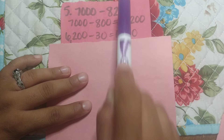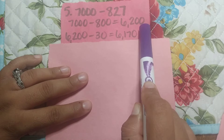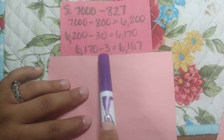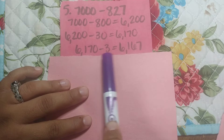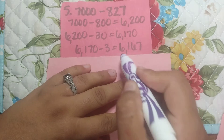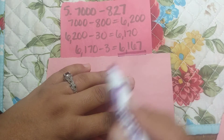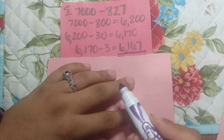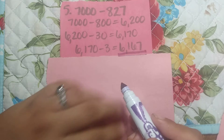Now you need to make up for that 3 that you had added to it. Subtract the 3 so that you get 6,167.